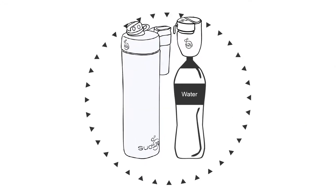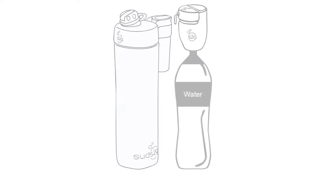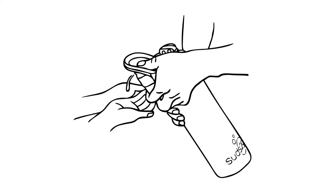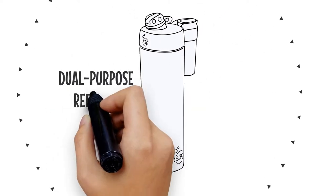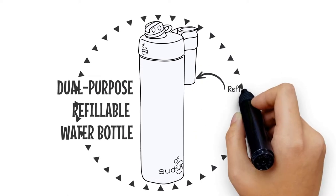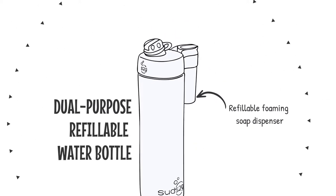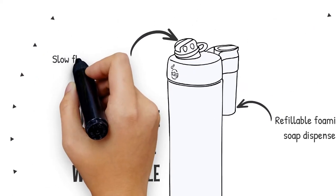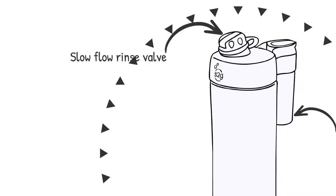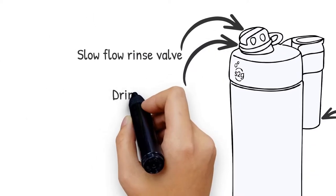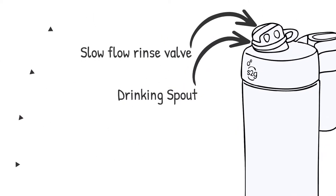This is why Suds2go offers two trustworthy products for portable hand washing. A dual-purpose refillable water bottle with a refillable foaming soap container that allows you to wash hands with soap conveniently. It features a rinsing valve that restricts flow to prevent water waste and will keep your dirty hands away from the drinking spout.